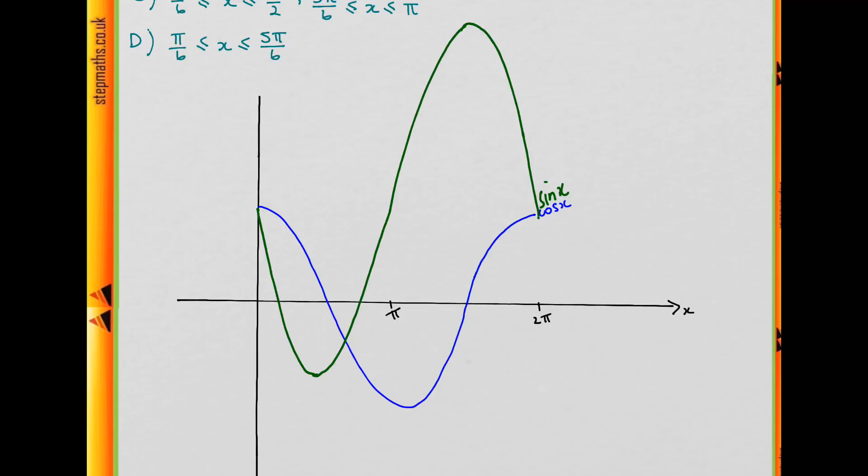So first of all, we see that up to this point where the green crosses the x-axis, they're both positive. And then afterwards, when the blue crosses the x-axis, they're both negative, up until this point.